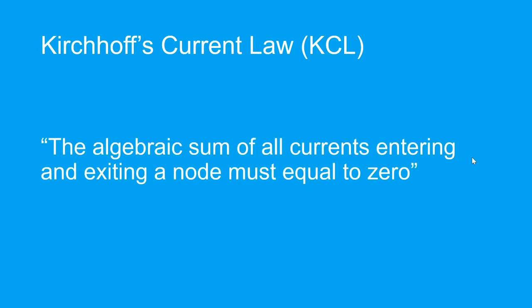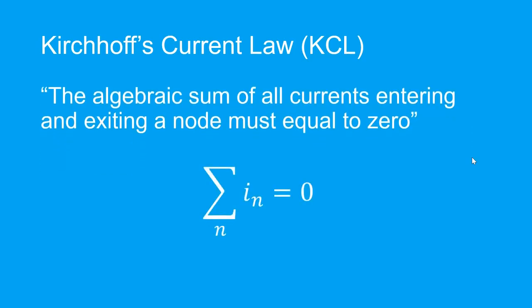It states that the algebraic sum of all currents entering and exiting a node must equal to zero. Symbolically, the law is shown like this.